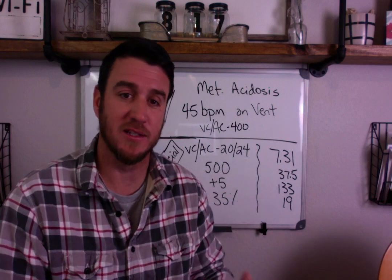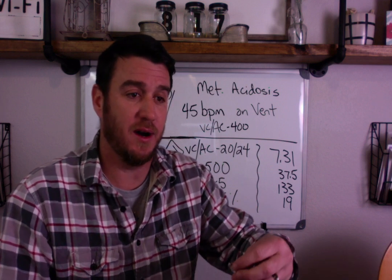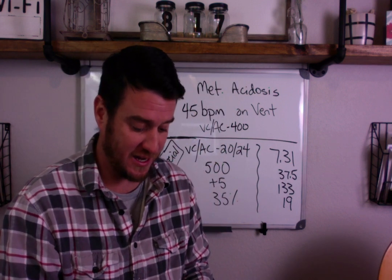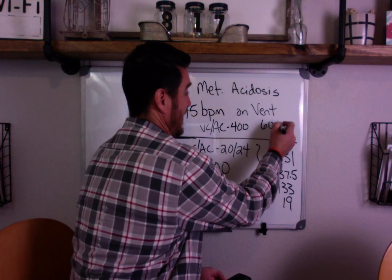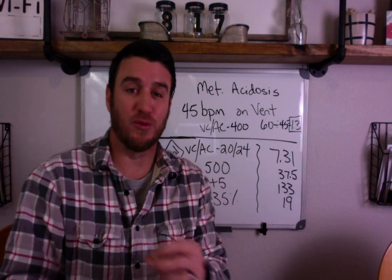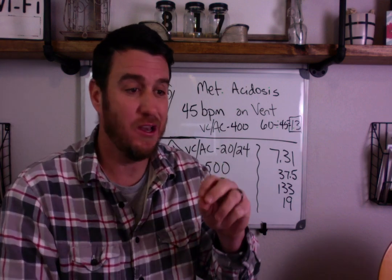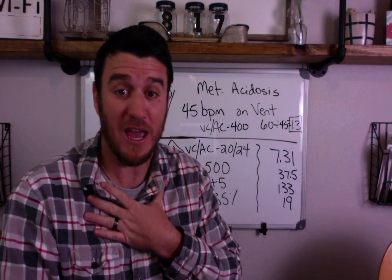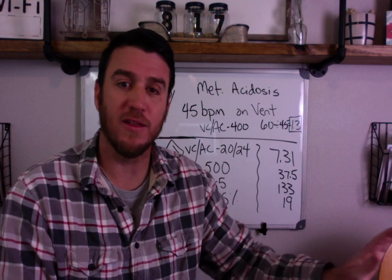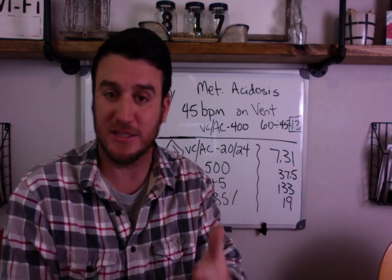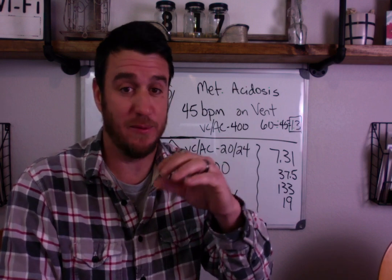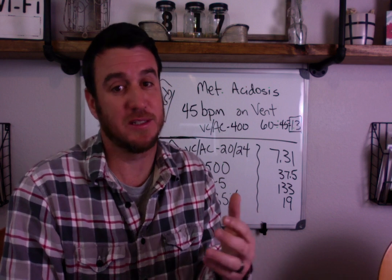A couple other things come to mind here. Breathing 45 breaths per minute in a volume control mode gives us a very, very short total cycle time. If you do 60 seconds divided by 45, you get 1.3 seconds — that's 1.3 seconds total cycle time. That means the patient has exactly a little over one second to get the breath in, whether it's controlled by the vent or if they're breathing spontaneously, and then get it all out. I time plus E time equals total cycle time. You can almost assume this patient has got to be air trapping on some level.